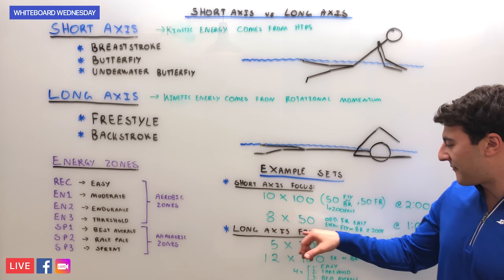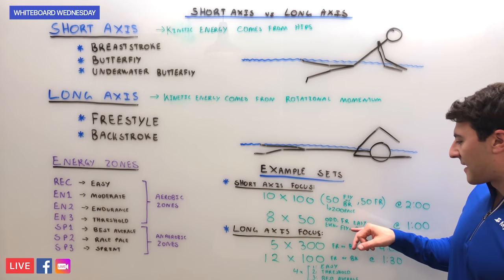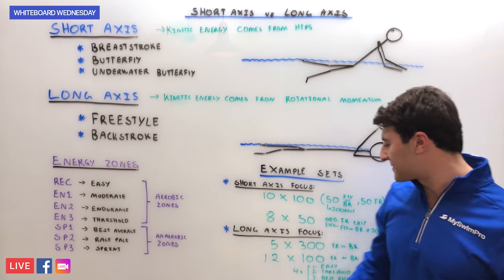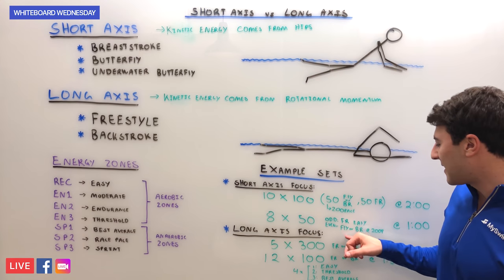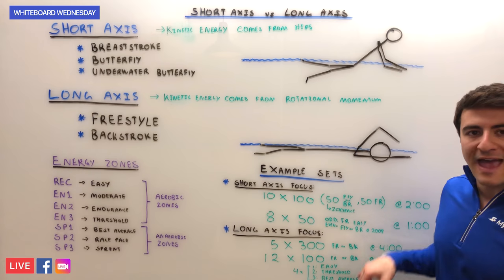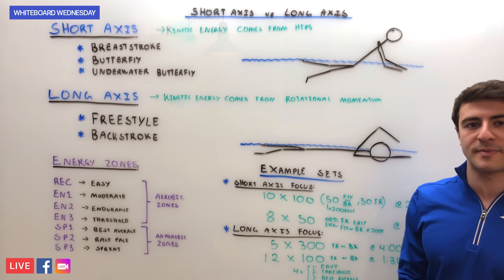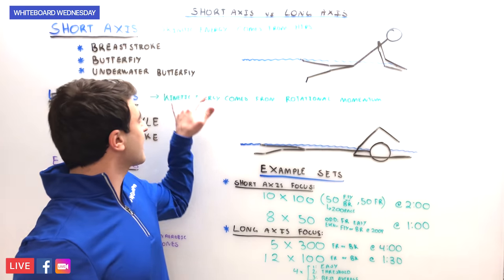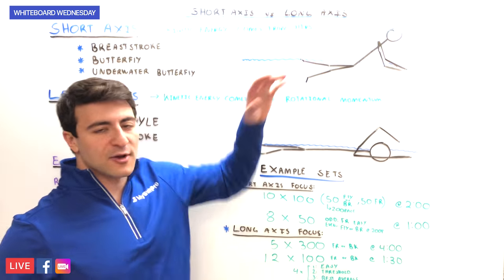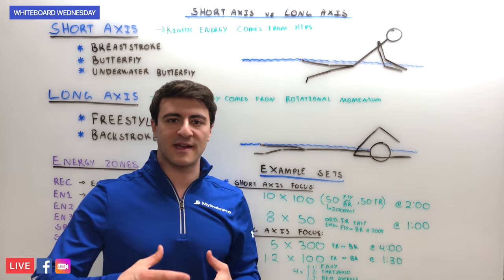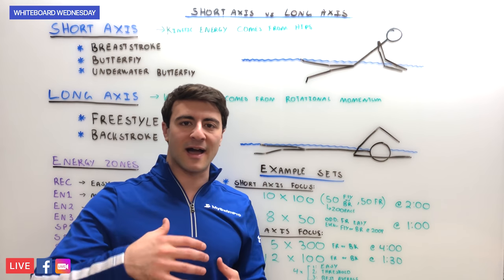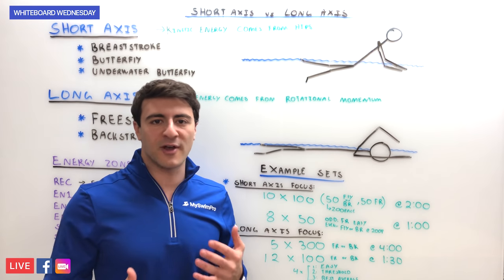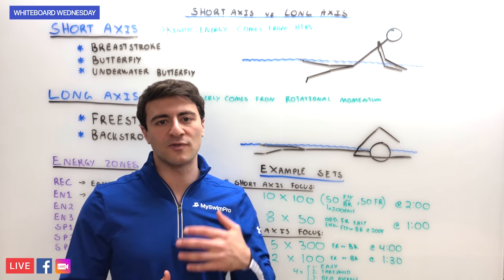The next example set is 8x50s: the odd 50s are freestyle easy (moderate or easy zone), and the even 50s are butterfly or breaststroke at 200 pace. When you're doing 200 or 100 pace for short axis strokes, you're teaching your body what it's like to move at a higher level in the water — because the last thing you want to do is train your body to move slow.